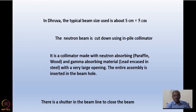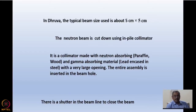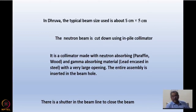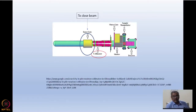The neutron beam is first cut down using an in-pile collimator in the beam path. The name itself indicates it is inside the pile — inside the biological shielding — inserted in the biological shielding so that we take out only the desirable beam size; the rest we try to cut down right inside the beam tube. This collimator is made with neutron-absorbing materials — paraffin, wood — and gamma-absorbing materials like lead encased in steel or even steel itself, with a large opening of at least 5 cm × 5 cm. There is also a shutter in the beam path to close the beam.